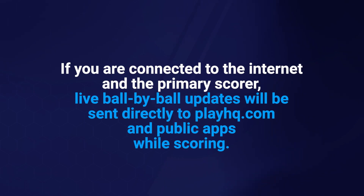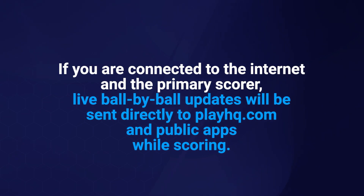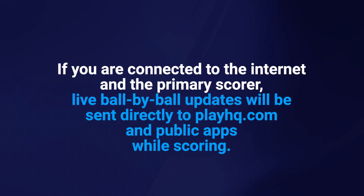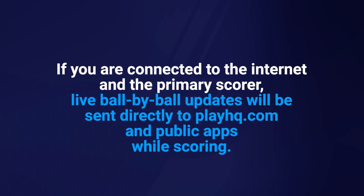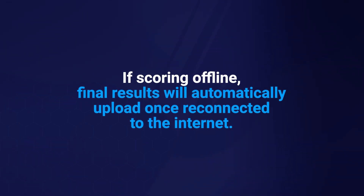If you are connected to the internet and the primary scorer, live ball-by-ball updates will be sent directly to PlayHQ.com and public apps while you're scoring. This allows your members and supporters to see the scores updated in real time. However, if you don't have internet access, you can still score the game offline. In this case, the final results at the end of the match will automatically upload when you regain internet connectivity.